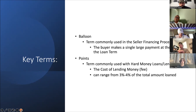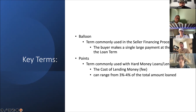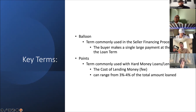Another key term commonly used with hard money loans is points. What I learned from Julian is that points, while often thought of as a percentage, is really just a definition for the cost that lenders charge you for lending money — it's a fee. I've heard people say they get one point, two points, and articles I've seen show points can range from 3 to 4% of the total amount loaned.